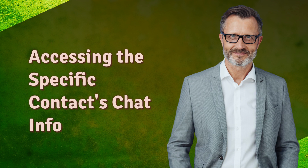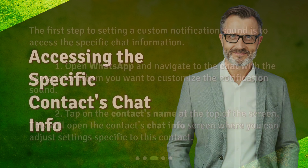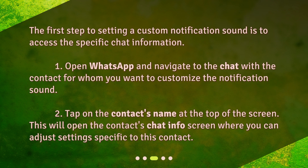Accessing the specific contact's chat info. The first step to setting a custom notification sound is to access the specific chat information. Open WhatsApp and navigate to the chat with the contact for whom you want to customize the notification sound. Tap on the contact's name at the top of the screen. This will open the contact's chat info screen where you can adjust settings specific to this contact.